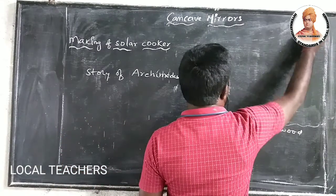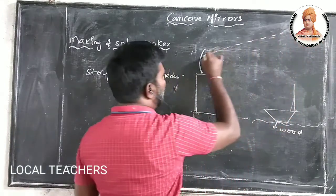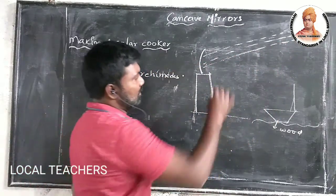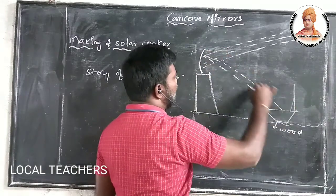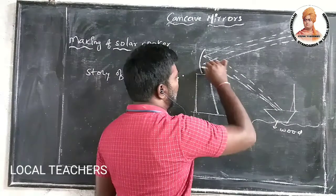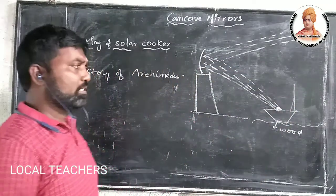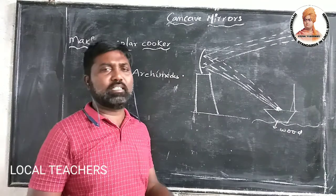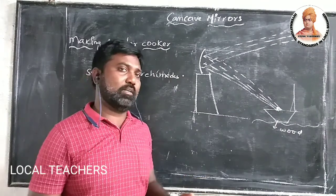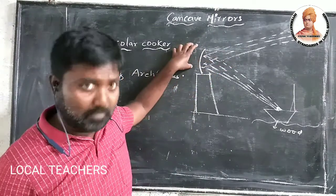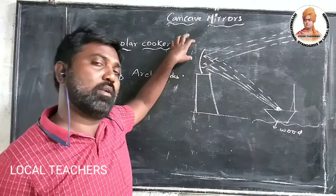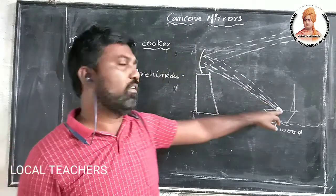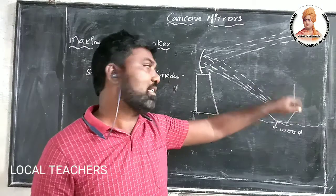When the sun rays fall on these mirrors, the soldiers move the mirrors in such a way that the reflected rays converge at a particular point on the ship. They used more number of mirrors as well as large mirrors, so that the reflected rays fall on a particular point on the ship only.